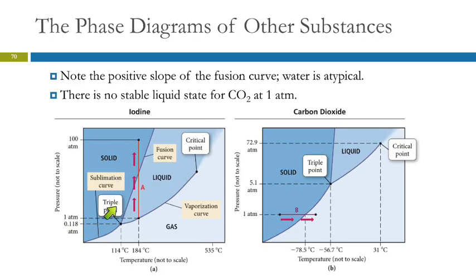So that's not normal. Most things have a positive slope in their fusion curve. This one is for iodine. This one's for carbon dioxide. The interesting thing about carbon dioxide, here's one atmosphere. At one atmosphere, there is no temperature at which the liquid is stable. You can't get liquid CO2 at one atmosphere of pressure. You have to go up here past five atmospheres before you can get liquid CO2.